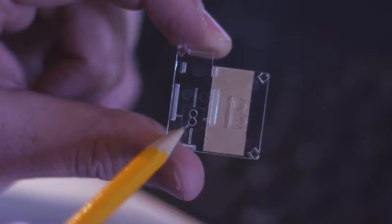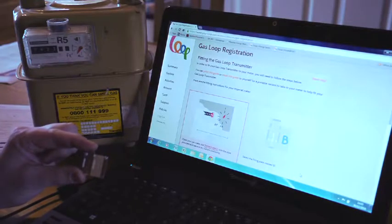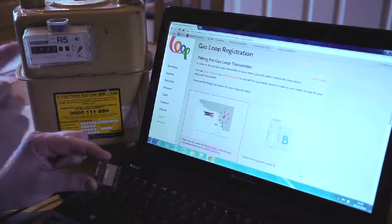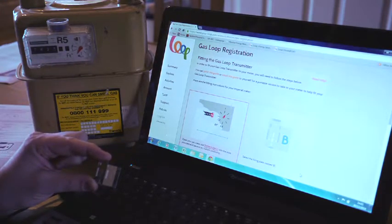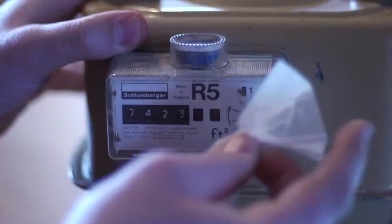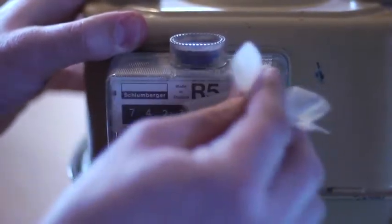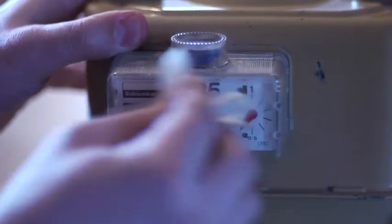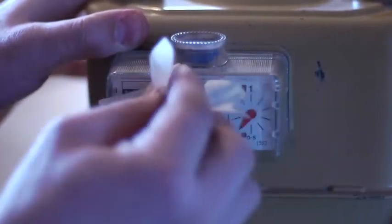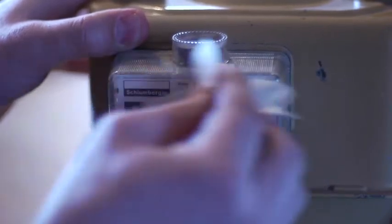Before installing, you should use the alcoholic wipe to wipe clean the surface of the gas index. This is to ensure that the adhesive tape sticks well to the front of your meter.